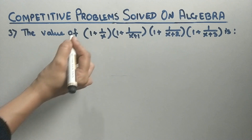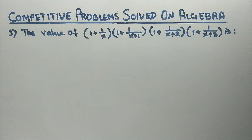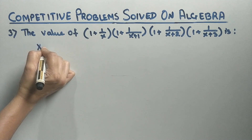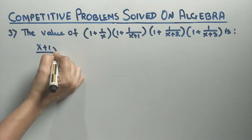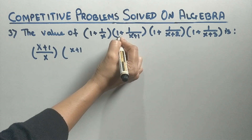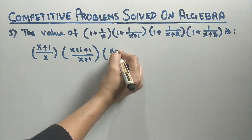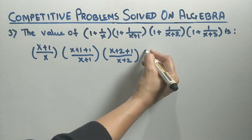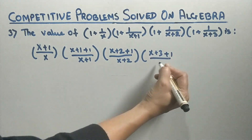Now we have to find the value of (1 + 1/x)(1 + 1/(x+1))(1 + 1/(x+2))(1 + 1/(x+3)). Taking LCM for each factor: the first term becomes (x+1)/x, the second becomes (x+2)/(x+1), the third becomes (x+3)/(x+2), and the fourth becomes (x+4)/(x+3).